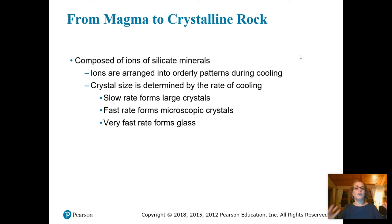We also have intrusive rocks that cool from magma underground, and these typically have larger crystals because they have a slower cooling rate. The ions in the magma are arranged in orderly patterns during cooling — that's what a mineral is, they form minerals. Crystal size is really determined by how quickly the rock is cooling. The slower the cooling, the larger the crystals will be. So if you see large crystals in a rock sample, it indicates that the rock formed underneath the surface, within the crust — an intrusive type of igneous rock.